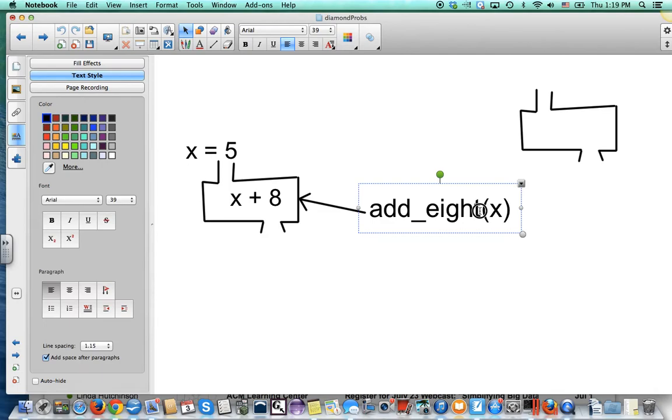In your book, instead of calling it add_eight, mathematicians just put an f there. So it's f(x), some function that happens to add 8. It takes some number and adds 8 to it. That's the name of the function.